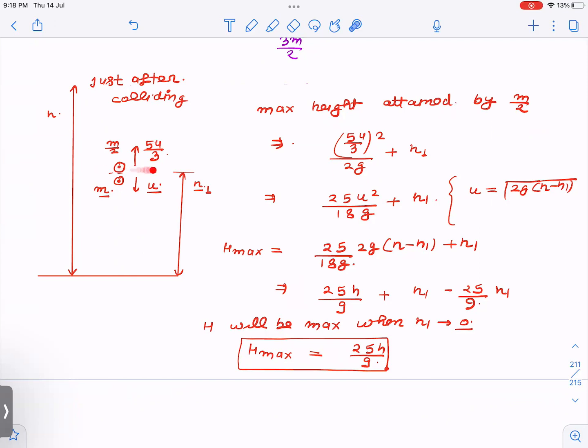And then from v²=u²+2as or from energy conservation, you can calculate u. It's a free fall velocity from this point to this point. So it is free fall, height is h-h₁, so root(2gh). So u² value I've substituted here.